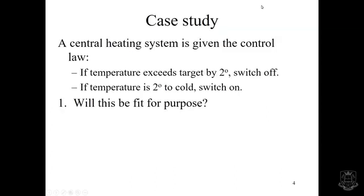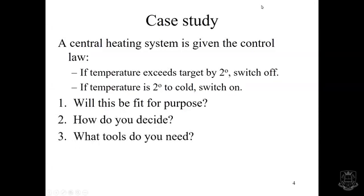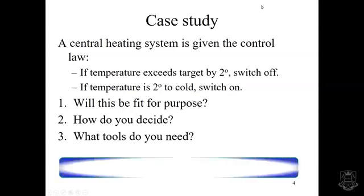Here's a case study of something slightly different. A central heating system is given the following control law: if the temperature exceeds the target by two degrees, switch the heating off; if the temperature is two degrees too cold, switch the heating on. So your question is, is this going to be fit for purpose? How do you decide whether this is fit for purpose, and what tools do you need to answer this question?